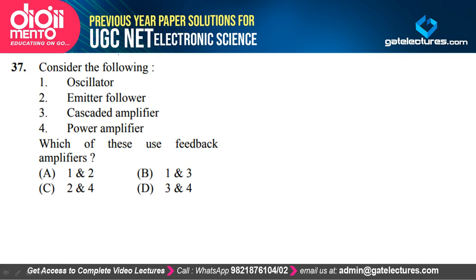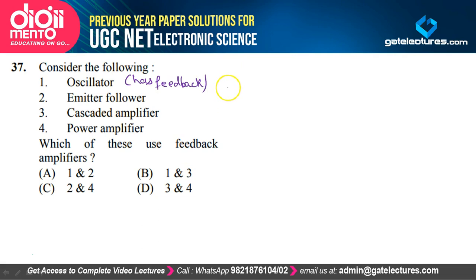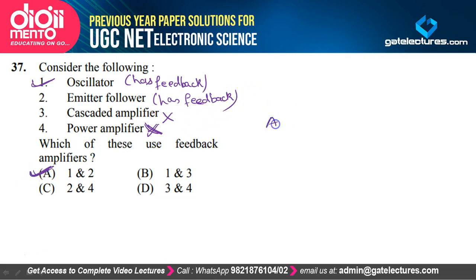Question 37: Which of the following use feedback amplifiers — oscillator, emitter follower, cascade amplifier, power amplifier? Oscillators require feedback to work; examples include RC oscillator, Wien bridge, Hartley, Colpitts, and Clapp oscillators. Emitter follower also has feedback. Cascaded amplifier and power amplifier do not have feedback. So only options 1 (oscillator) and 2 (emitter follower) are correct — option A is correct.